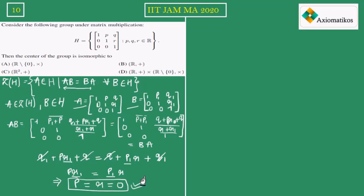So we have proved that Z(H) consists of all matrices of the form [1, 0, Q; 0, 1, 0; 0, 0, 1] such that Q belongs to ℝ. This is your Z(H).